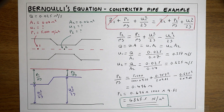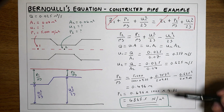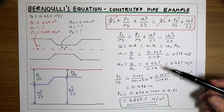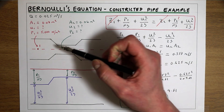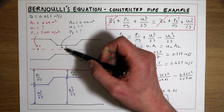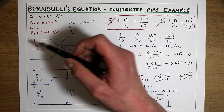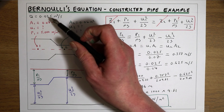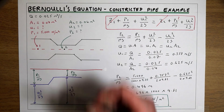So in this example we've used Bernoulli's equation and the principle of continuity to work out the pressure at point 2 in a constricted pipe, given the pressure at point 1 and the flow rate in the pipe.